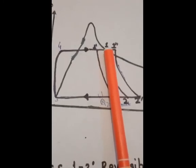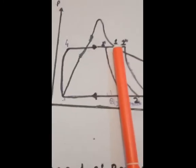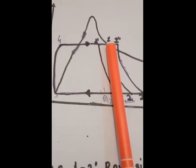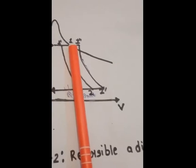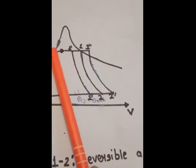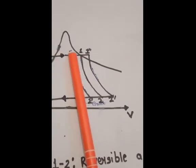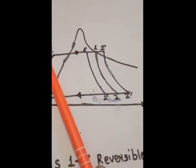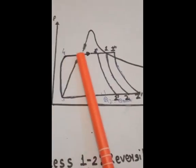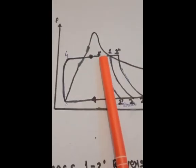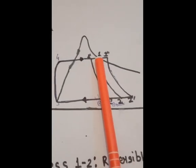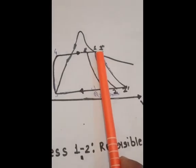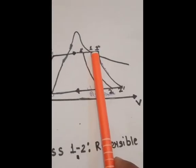In the 4 to 1 process, pressure remains constant, heat is added, and the volume increases. Due to the addition of heat, the liquid water is converted into steam, and therefore the volume of the water increases as it converts into steam.